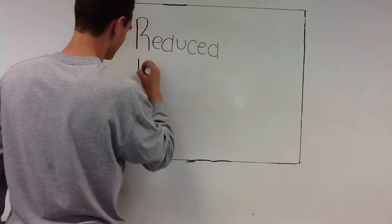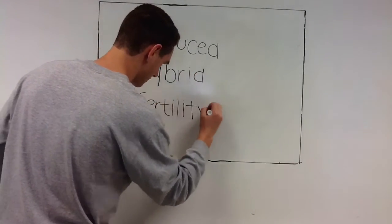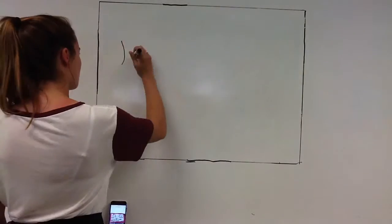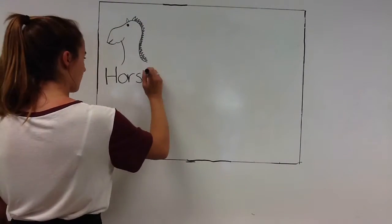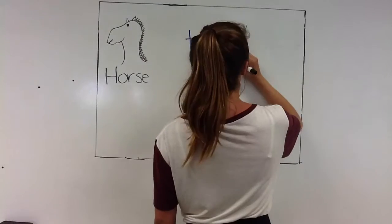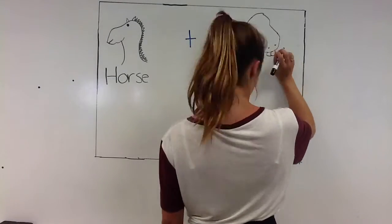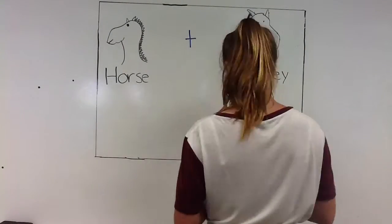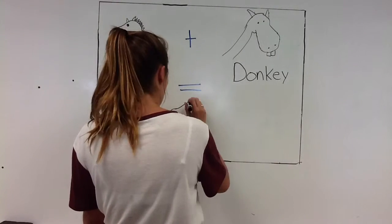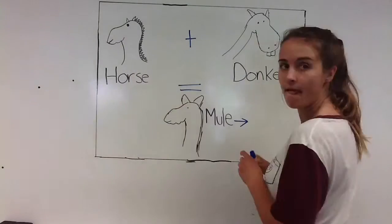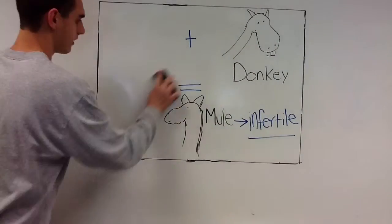Reduced hybrid fertility is when a viable hybrid is produced, but is sterile, so unable to reproduce. The reason this occurs is that the two species have different chromosome numbers, so when the offspring goes to perform meiosis, the chromosomes cannot segregate in a manner that allows them to be fertile. A classic example shown above is when a horse is mated to a donkey producing a mule, but the horse and the donkey are obviously fertile, but the mule is not because it has a different chromosome number.